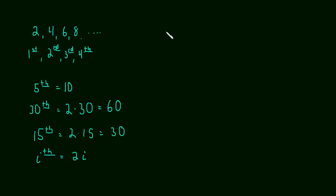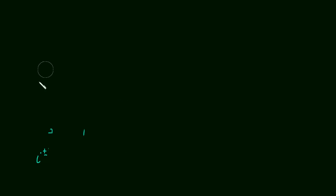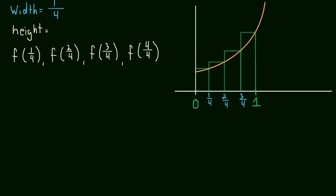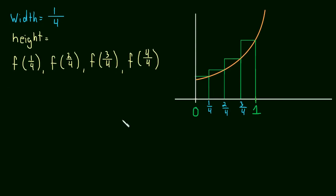So the formula for finding any term — if you want the thousandth and one term, it's just two times one thousand and one, or two thousand and two. We could find any term in this list by the formula two times i. I know I'm belaboring the point, but that's actually the hardest part about doing Riemann sums, which is what we're doing. Understanding that is, in my opinion, the hardest part — and it's not too difficult.